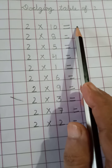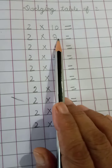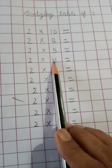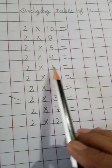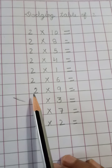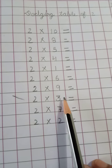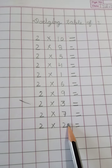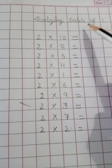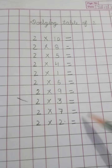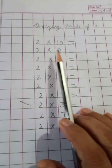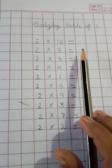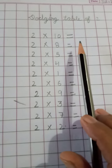So right here: 20. The dodging table gives the multiplications in random order — 2 eights are, 2 fives are, 2 fours are, 2 ones are, 2 sixes are, 2 nines are, 2 threes are, 2 sevens are, and 2 twos are. You write the answers here. Beat beat me se likhna — write them randomly.